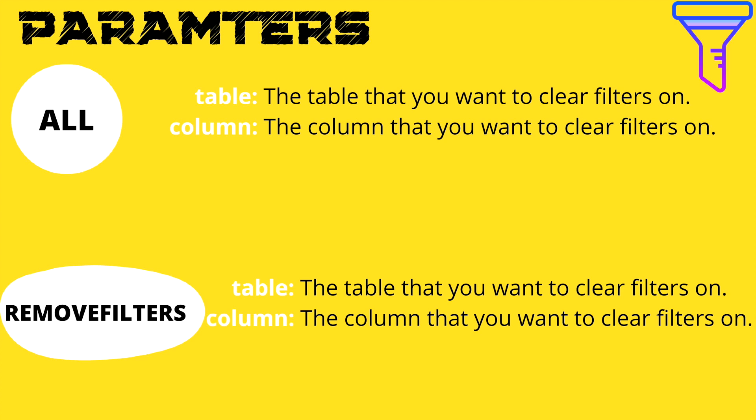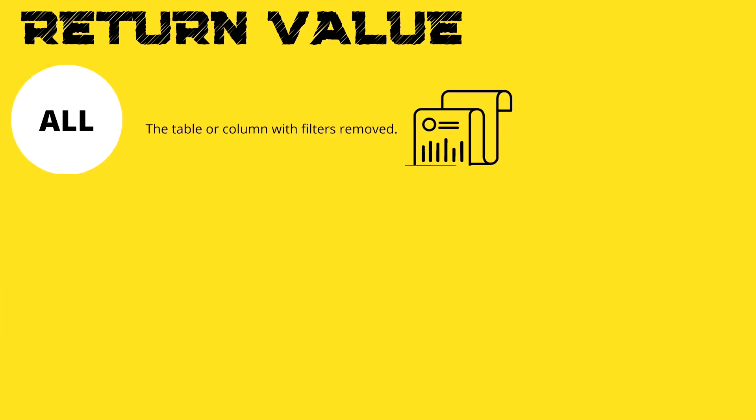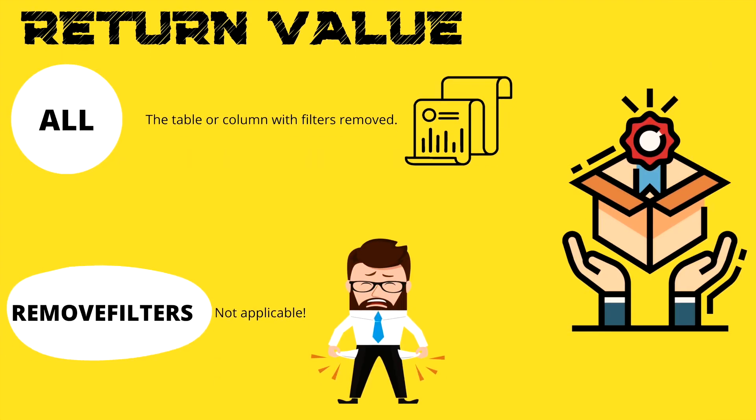Now we are going to talk about the parameters in both of these filter functions. Whenever you are working on these two DAX filter functions, you always have to provide either the table or the column name. The table parameter is the table you want to clear the filters on, and the column parameter is the column you want to clear the filters on.